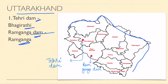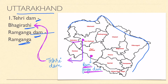Next is Uttarakhand. In Tehri Garhwal district there is Tehri Dam on the Bhagirathi River - very important. Second is Pauri Garhwal district, which has Ramganga Dam on the Ramganga River.